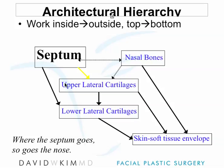The septum sits at the top of the architectural hierarchy of the nose. Because the septum is the foundation of the nose, it's interconnected very intimately with the nasal bones. And these two structures have a significant bearing on the position of the cartilaginous structures in the lower two-thirds of the nose. So there's an adage in rhinoplasty that where the septum goes, so goes the nose.